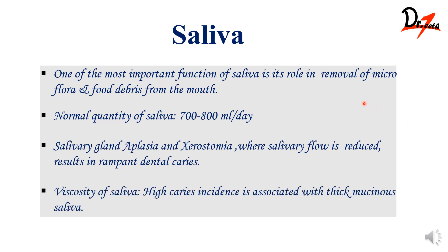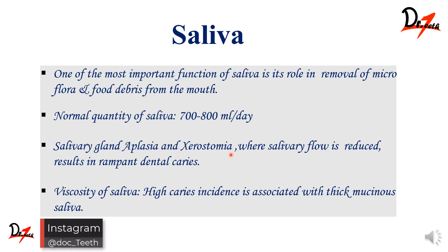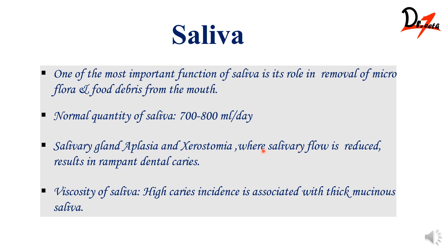Next we have saliva. The major function of saliva is to flush out microorganisms and food debris present in the mouth. Normally, salivary flow is 700 to 800 milliliters per day. In people with xerostomia, dry mouth, or aplasia of the salivary gland, salivary flow is reduced, which can trigger dental caries. Even viscosity matters — if saliva is very thick and mucinous, that ropy, highly viscous saliva can also cause dental caries.